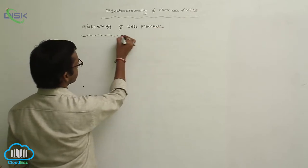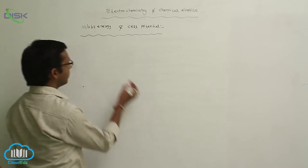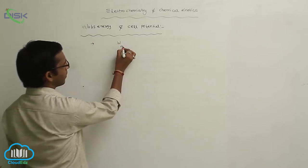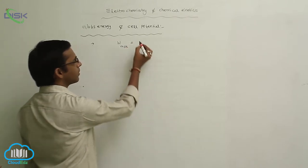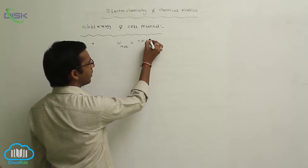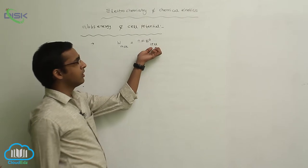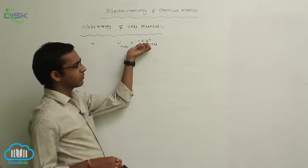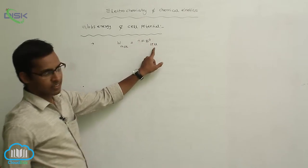New topic: Gibbs energy and cell potential. The maximum work equals the electrode potential of the cell: W maximum equals NFE naught cell, where N is the number of electrons flowing through the circuit.